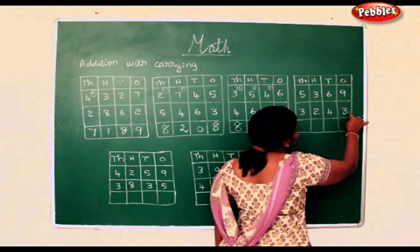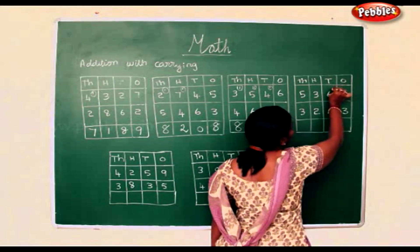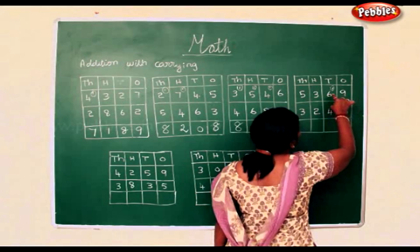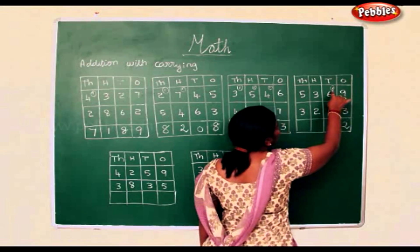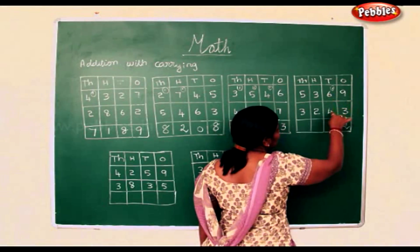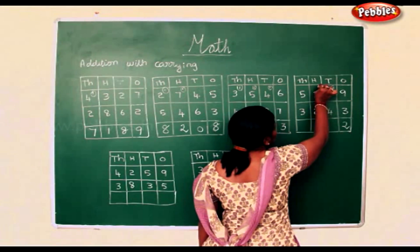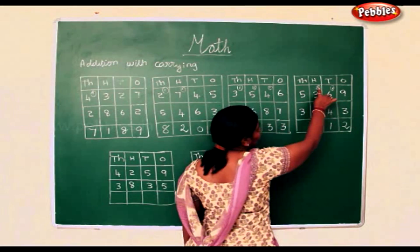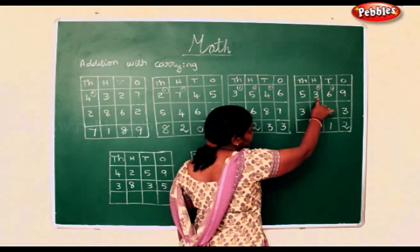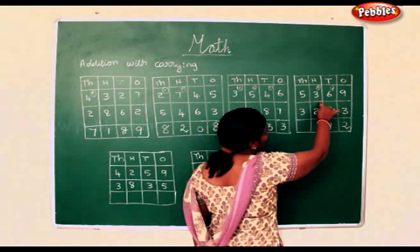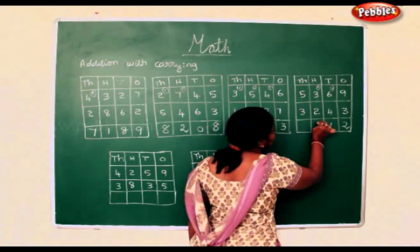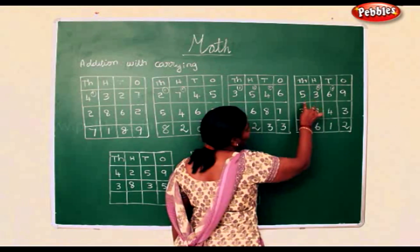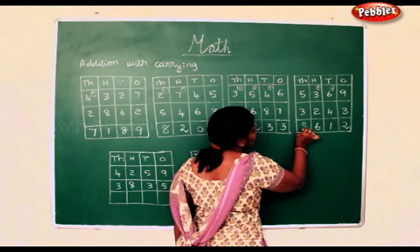9 add 3 is 12. 1 add 6 is 7. 7 add 4 is 11. 1 add 3 is 4. 4 add 2 is 6. 5 add 3 is 8.